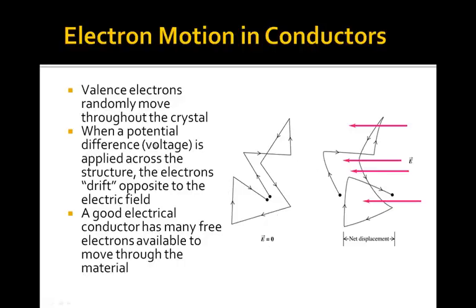Once we apply a potential difference, a voltage, or an electric field across this structure, the electrons are going to tend to move in a direction opposite of the electric field. They're still going to move somewhat randomly — bouncing against other electrons and electrostatic fields generated by the atomic structure — but on average they'll drift in the direction opposite of the electric field. An electric field is drawn from a positive charge to a negatively charged area, so electrons drift toward the positive location, which is opposite the electric field. A good electrical conductor has a lot of free electrons available to drift throughout the material when we apply an electric field.